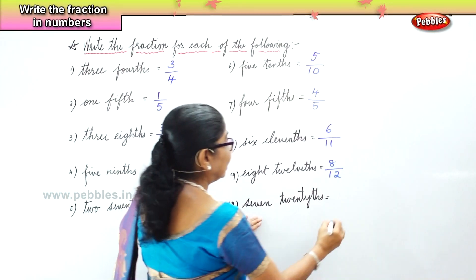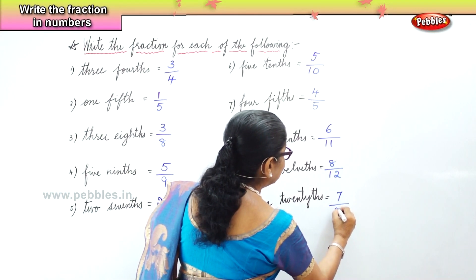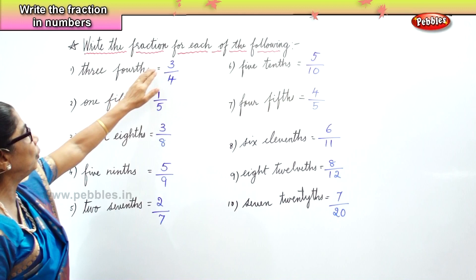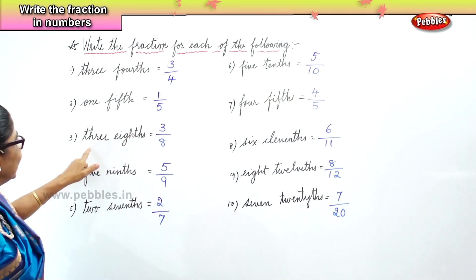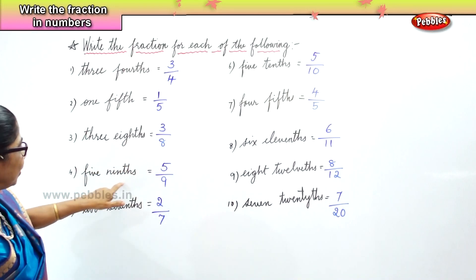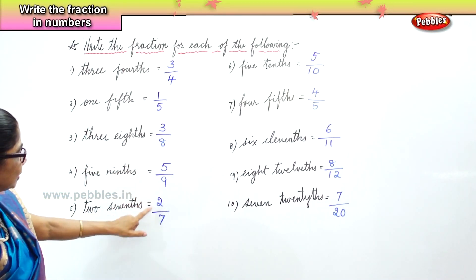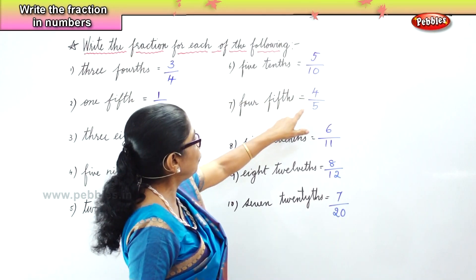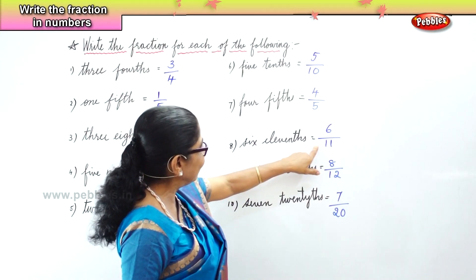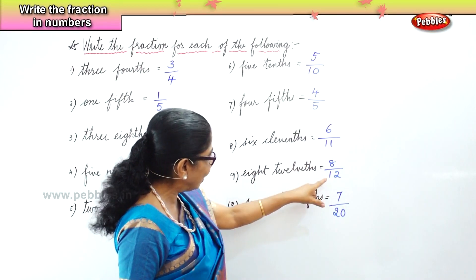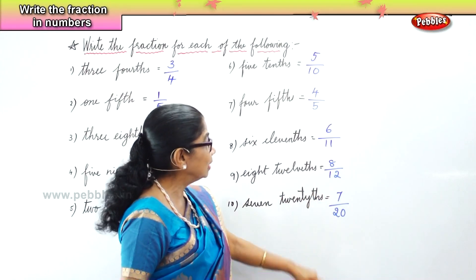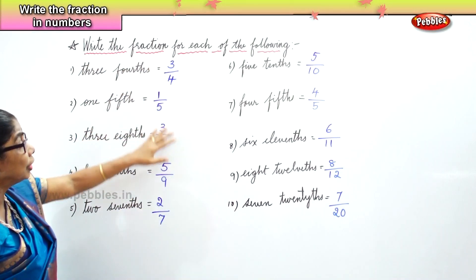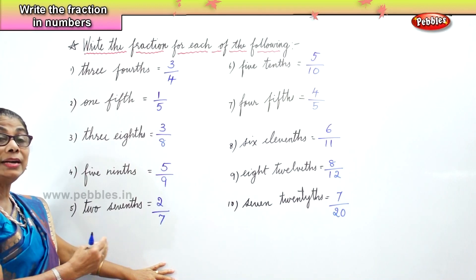Seven-twentieths — seven parts are colored and the total number is twenty. So we have the fractional numbers: three-fourths, one-fifth, three-eighths, five-ninths, two-sevenths, five-tenths, four-fifths, six-elevenths, eight-twelfths, and seven-twentieths. We wrote the fraction for each of the words given.